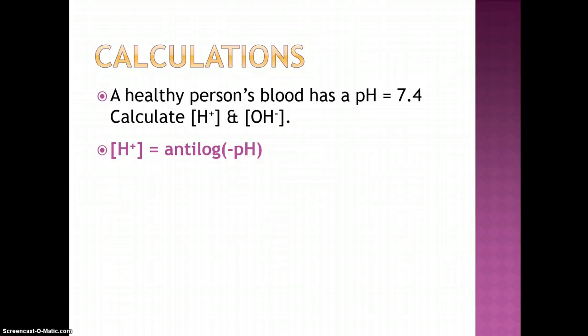The first thing that we can calculate is the hydrogen ion concentration using the anti-log of the negative pH. This becomes 10 to the negative 7.4 and our hydrogen ion concentration is 4 times 10 to the negative 8 molar.